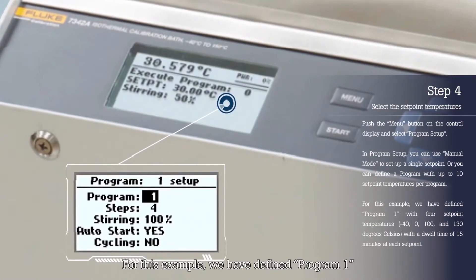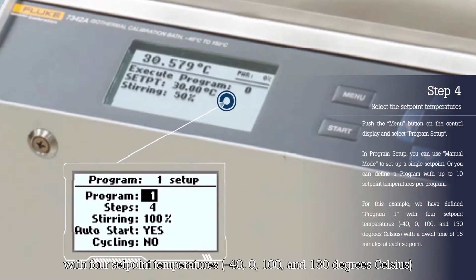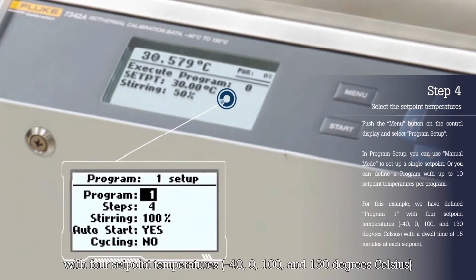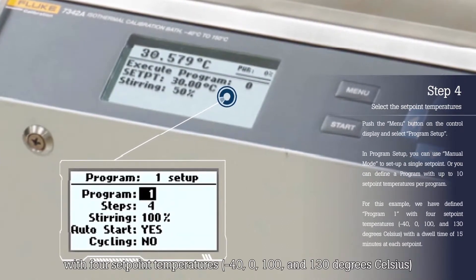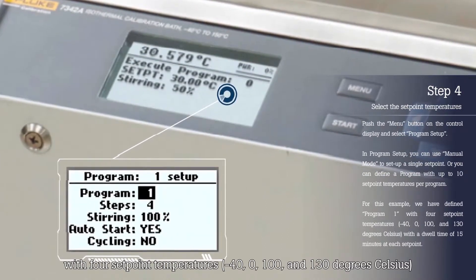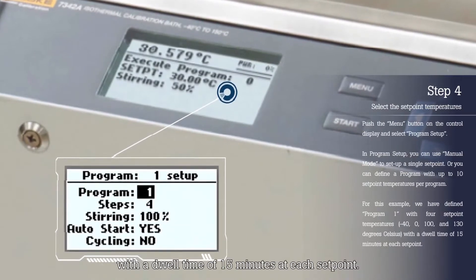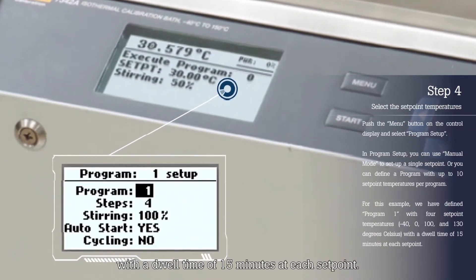For this example, we have defined Program 1 with four set point temperatures: minus 40, 0, 100, and 130 degrees Celsius with a dwell time of 15 minutes at each set point.